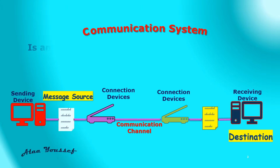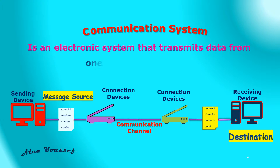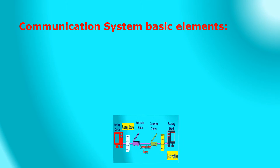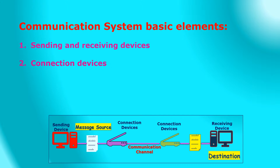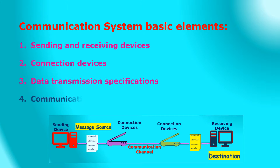A communication system is an electronic system that transmits data from one location to another. A communication system has four elements: sending and receiving devices, connection devices, data transmission specifications, and communication channel.